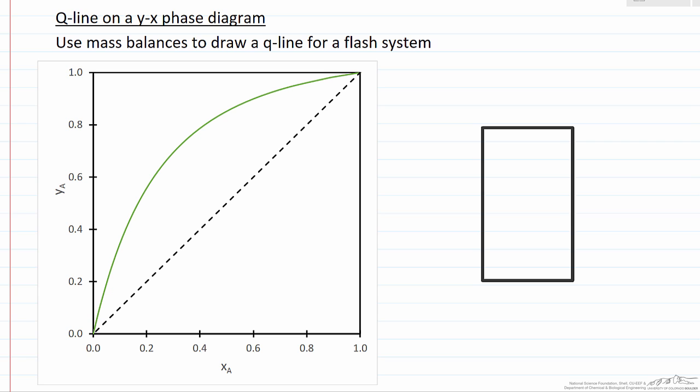So let's look at the system whose behavior we're interested in, and that's if we have a flash where we have some feed, and its mole fraction of component A - we're looking at a binary mixture - is ZA, and what we're going to do is flash to get vapor, which has a mole fraction YA, and liquid, a mole fraction of XA.